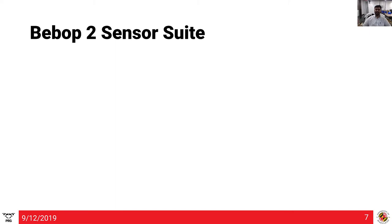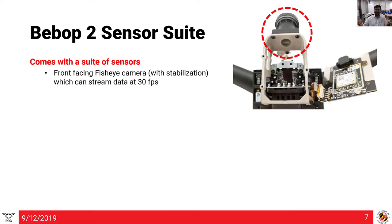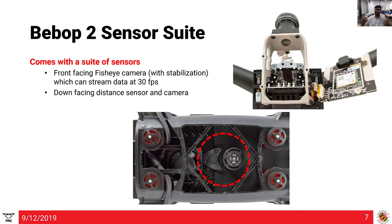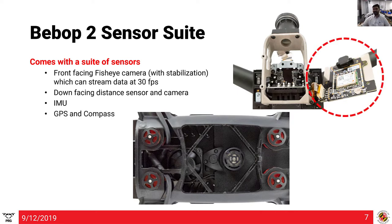The Bebop 2 comes with a suite of sensors. It has a front-facing fisheye camera with built-in digital stabilization that streams over Wi-Fi at 30 Hz. It has a down-facing distance sensor and low-resolution camera — similar to the PX4 flow sensor used in the community. It has an onboard IMU enclosed in a black box to insulate it from motor magnetic interference. It also has GPS and a compass, without which the Bebop will not arm, so it can function both indoors and outdoors.